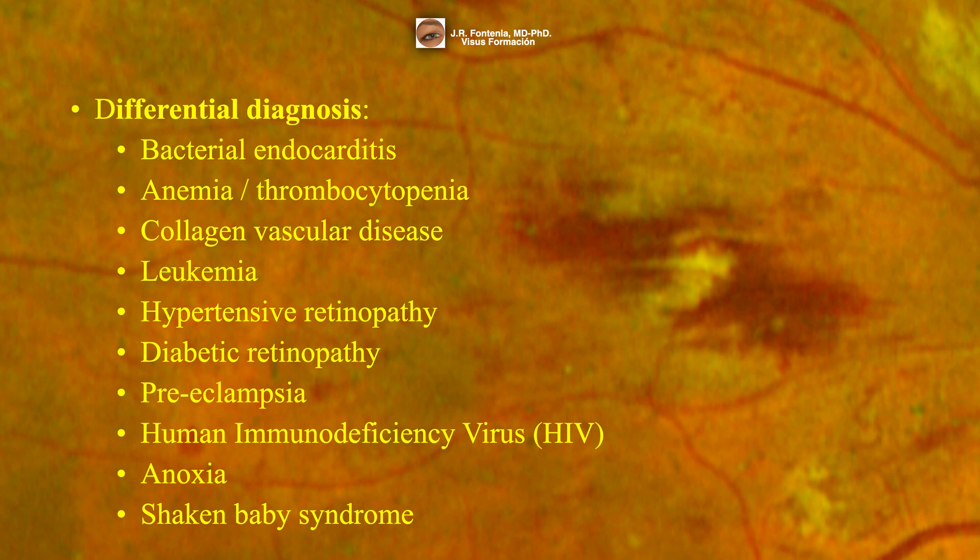Historically, Roth spots were considered to be a pathognomonic finding of bacterial endocarditis secondary to septic emboli within the retina. However, Roth spots occur in many pathological processes, as you can see listed here.